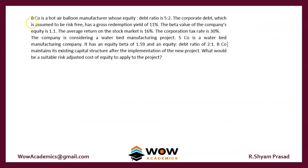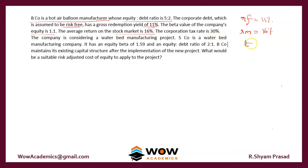Bico is a hot air balloon manufacturer whose equity-to-debt ratio is 5 to 2. The corporate debt, assumed to be risk-free, has a gross redemption yield of 11%, so Rf is 11%. The beta value of the company's equity is 1.1. The average return on the stock market is 16%, so Rm is 16%. The corporation tax is 30%, so T is 30%.